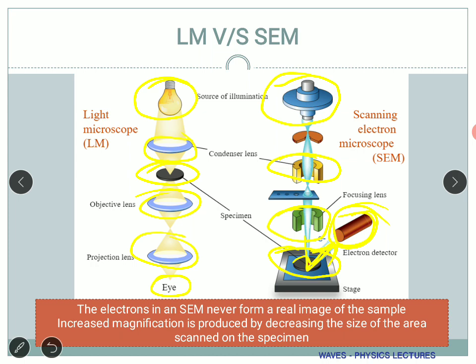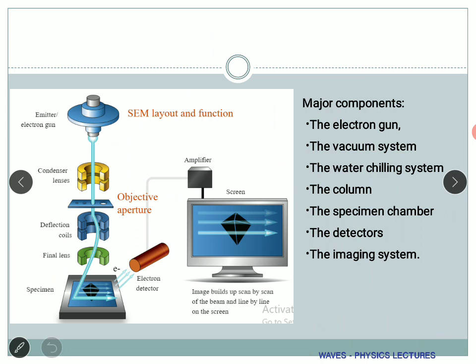You have to remember that the electron in an SEM will never form a real image of the sample. When we look through a microscope we are looking at a real image, but here it is basically a representation. Depending on how many backscattered electrons are accumulated in the detector, that sends an image — giving a sense of depth. Increased magnification is produced by decreasing the size of the area scanned on the specimen, so we can keep changing magnification depending on need.